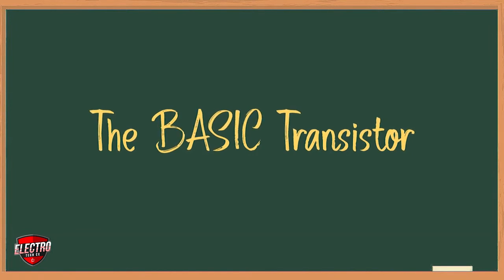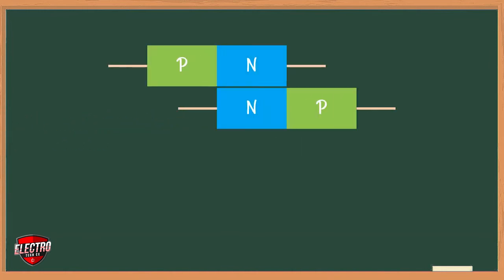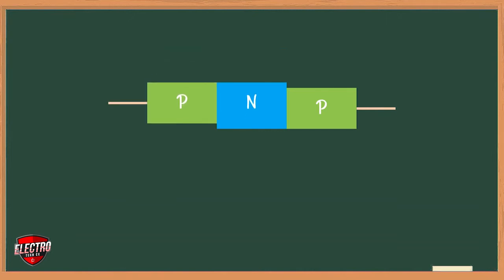Basically, a transistor consists of two back-to-back PN junctions manufactured in a single piece of semiconductor crystal. These two junctions give rise to three regions called emitter, base, and collector, as you can see in the figure.